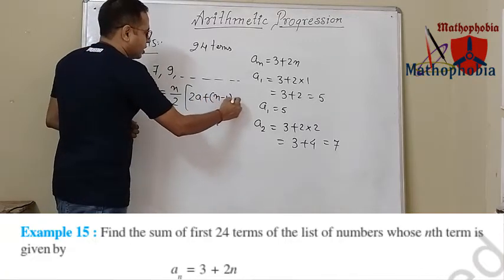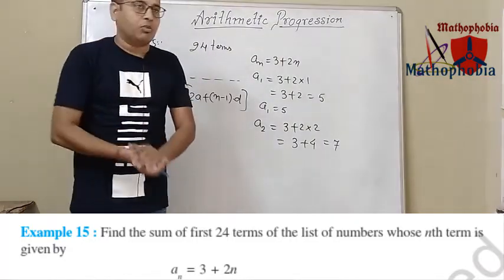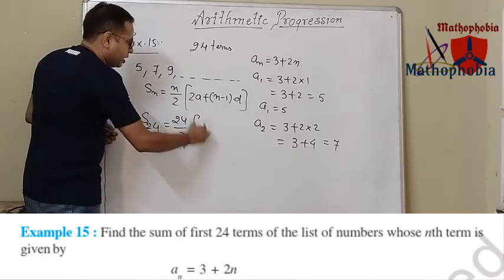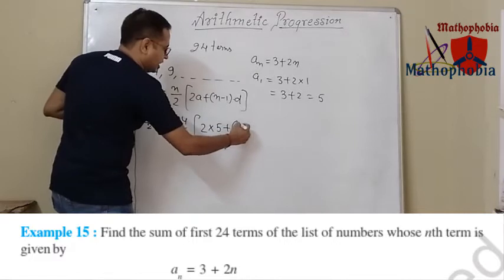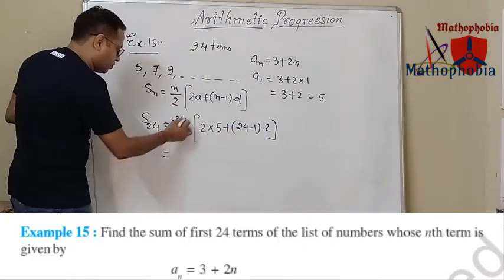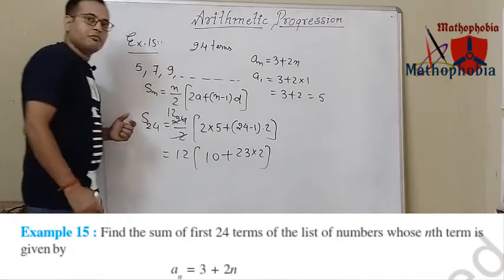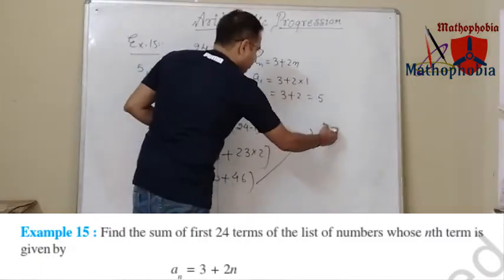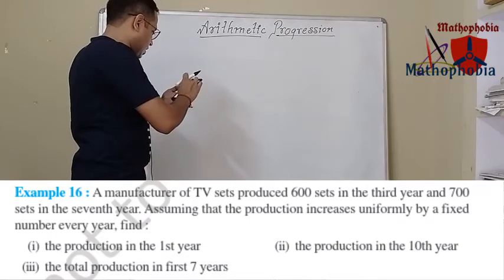We apply the formula Sn equals n upon 2 times 2a plus n minus 1 into d. With n equals 24, S24 equals 24 upon 2 times 2 times 5 plus 23 times 2. This gives 12 times 10 plus 46 equals 12 times 56, which equals 672.